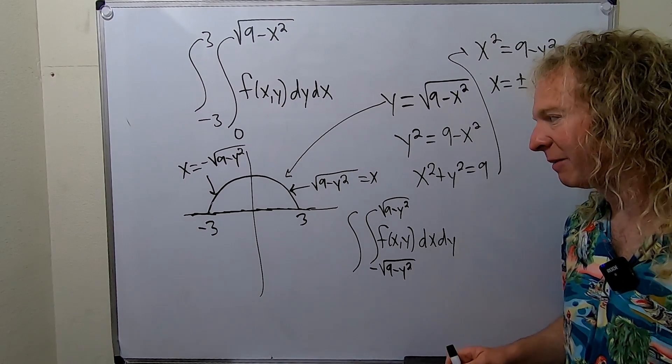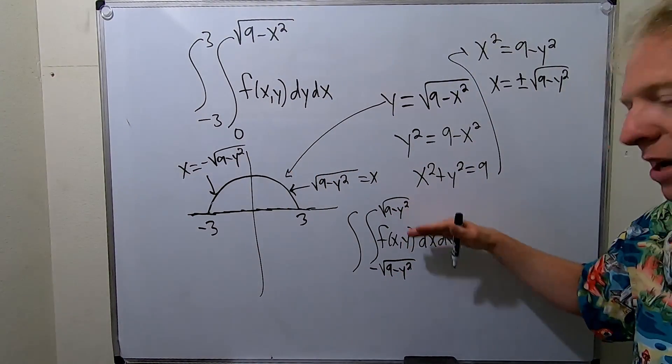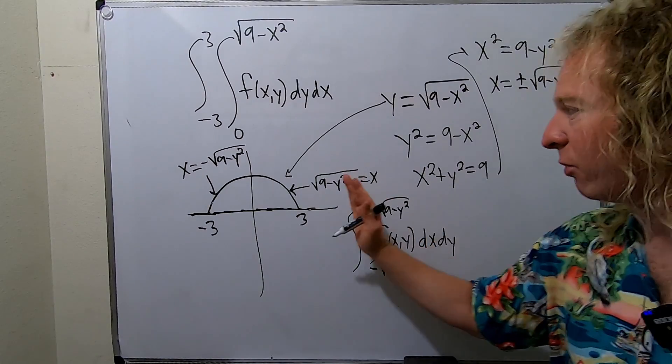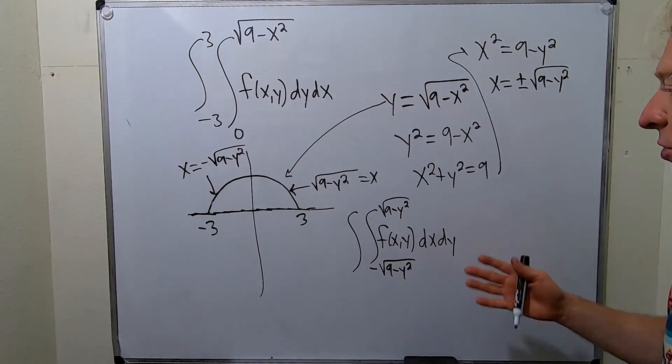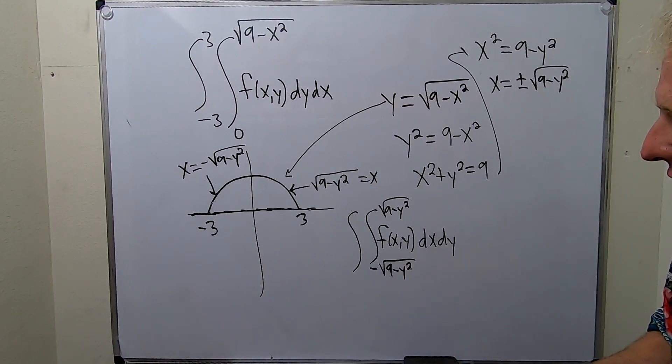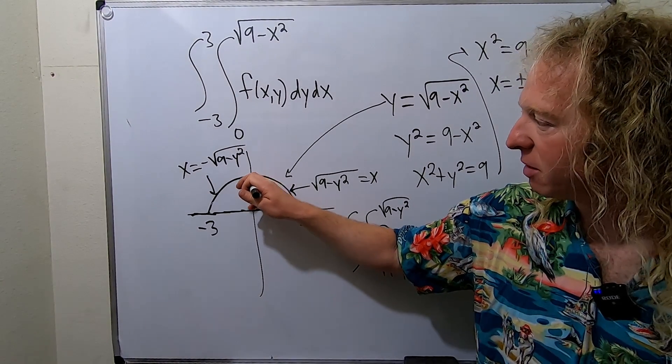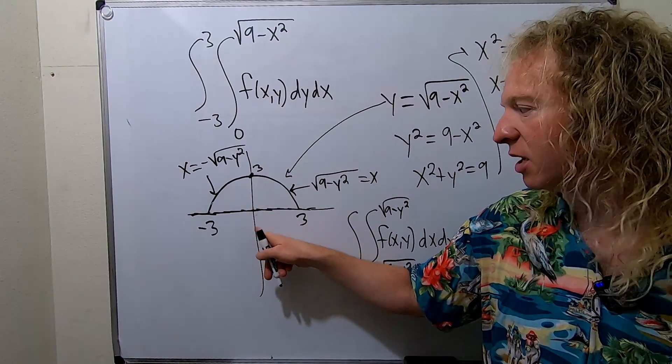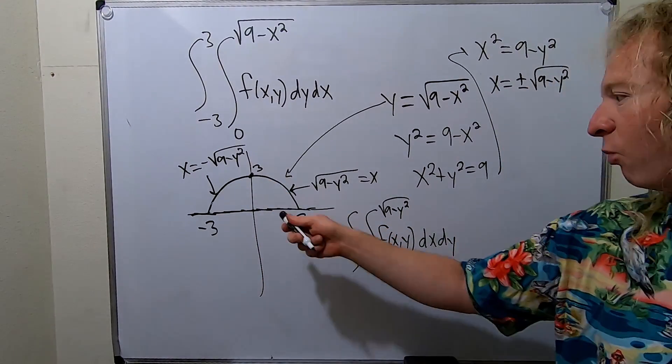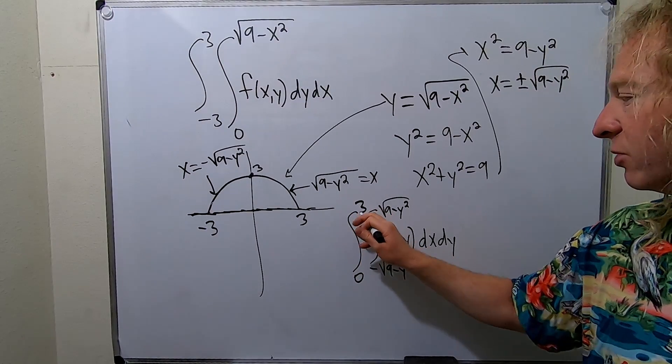Another way to think about it is right minus left. Top minus bottom, right minus left. Both of those ways of thinking work and will always give you the right answer. And then y has to go from here to here. So this number is 3. Remember it's a circle of radius 3 centered at the origin. So we're going from y equals 0 to y equals 3.